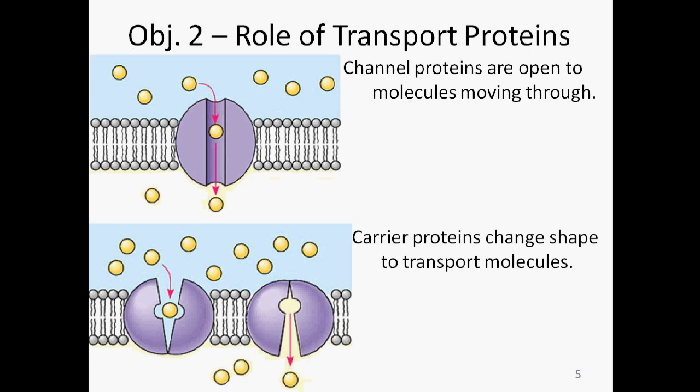Alright, objective two, we're going to talk about the role of transport proteins. There are two basic types of proteins involved in transport of molecules into and out of a cell. The first type are channel proteins and literally look exactly like what they do. A channel between two bodies of water is just an area that kind of opens up and allows water to flow through. That's what these proteins are doing. They are open and they allow molecules to flow through the membrane. Membrane being this part right here. Protein is a big purple blob.